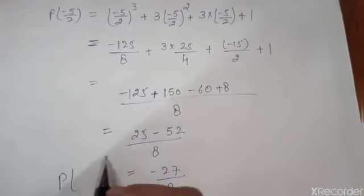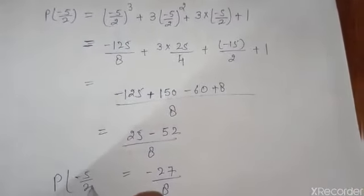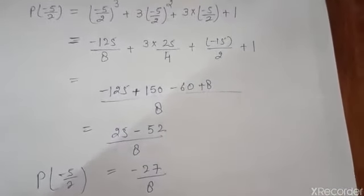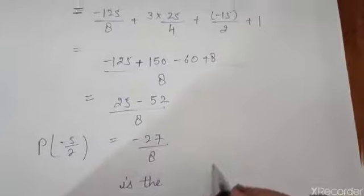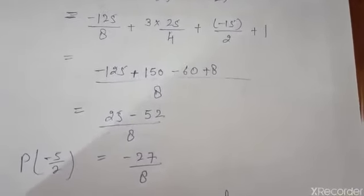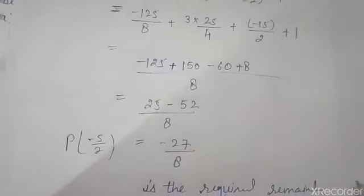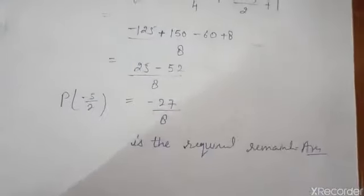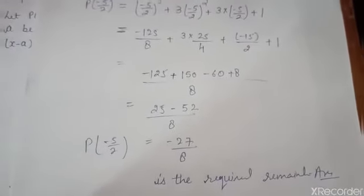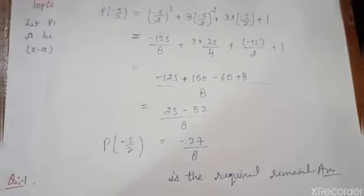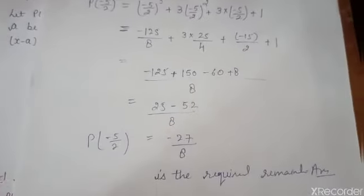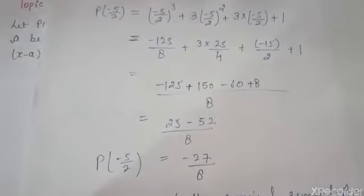So the value of the polynomial at minus 5 by 2 is equal to minus 27 by 8, which is the required remainder. I hope you understand. Within 2 or 3 steps, you can easily find the remainder of any given polynomial. Go through the exercise and solve the sums. Goodbye.